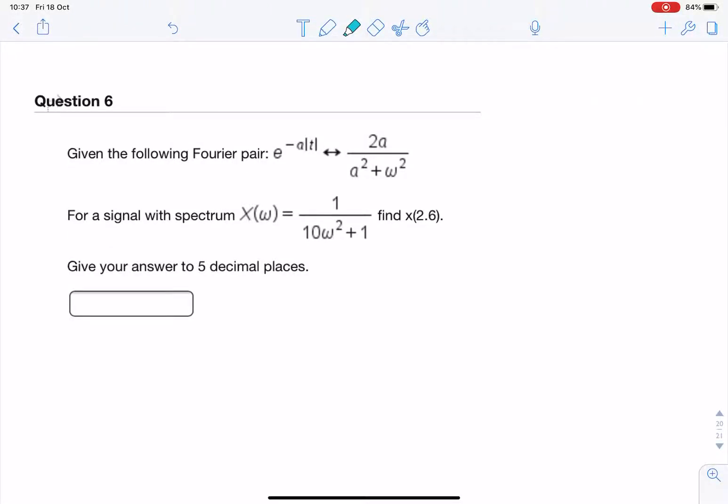So this question is asking us for the value of x when time is 2.6 and we're given a Fourier pair. So somehow we need to find the inverse Fourier transform of the signal that we're given.